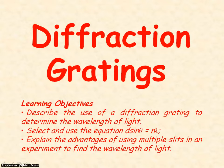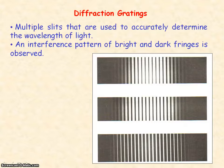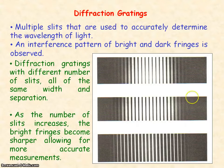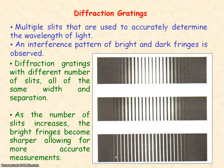We're going to be looking at diffraction gratings. Diffraction gratings are multiple slits that are used to accurately determine the wavelength of light. The light that passes through the multiple slits interferes to produce a pattern of bright and dark fringes. These images show diffraction gratings where we're increasing the number of slits. As we increase the number of slits, the bright fringes become sharper and more defined, which allows accurate measurements to determine the wavelength of light.